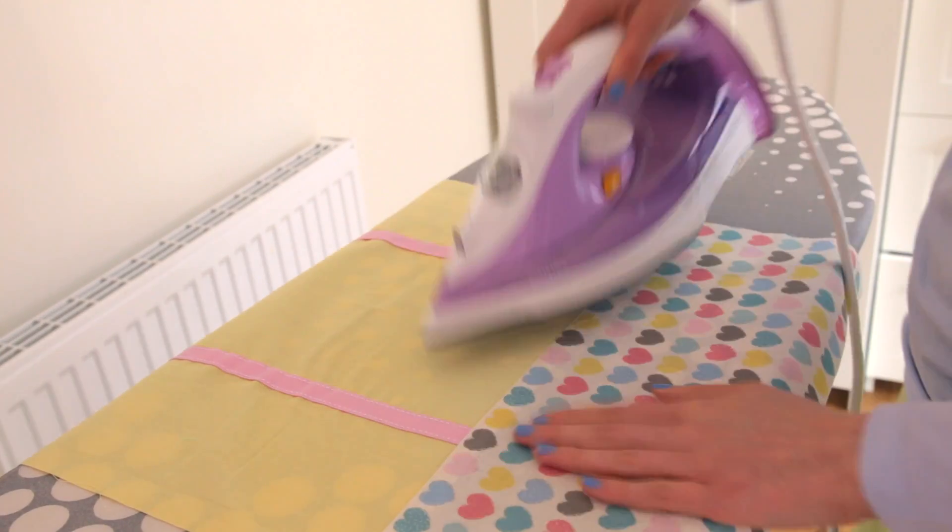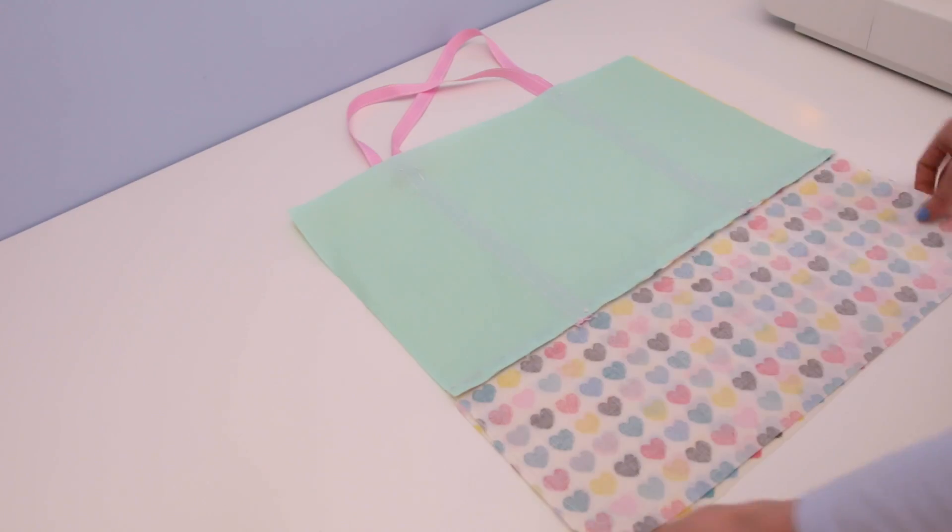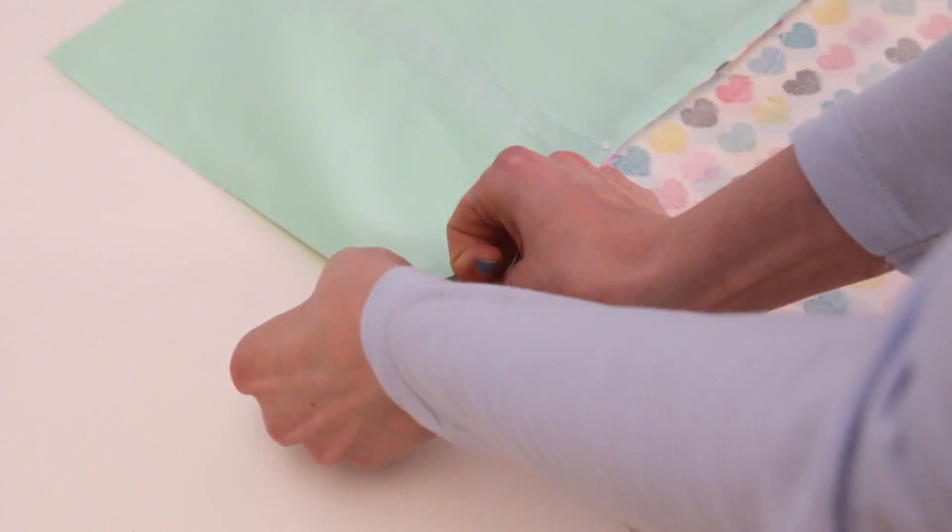When done with both, I use an iron to help flatten them together. And for the next part, lay the fabric pieces on top of each other, back side facing out, and sew the bottom three edges together, leaving the top open.